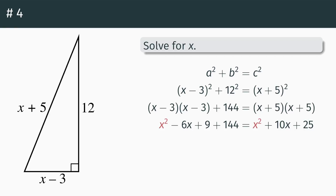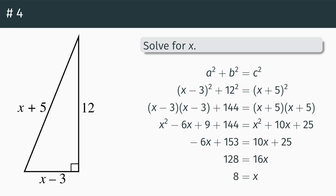Notice x squared shows up on both sides, so we subtract it out. We also add together nine and 144 to get 153. Now we've got negative six x plus 153 equals ten x plus 25. We add six x to both sides and subtract 25 from both sides, giving us 128 equals 16x. We divide by 16 on both sides and get x equals eight. There's our answer: eight.